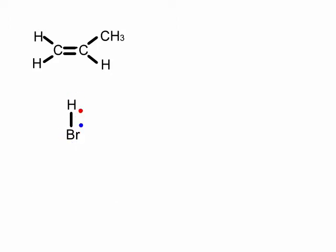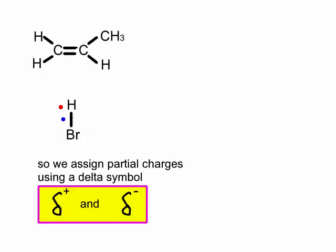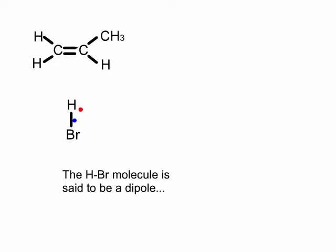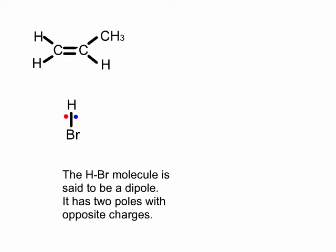This means we assign a small negative charge to the bromine atom, using the symbol delta from the Greek alphabet — so it's assigned a delta minus. And the hydrogen, which therefore has a slight electron deficiency, is assigned a delta plus charge. We need to know this to appreciate why these molecules come together and react. The HBr molecule is said to be a dipole — di meaning two — so two poles: at one end the delta plus pole, and at the other the delta minus pole.